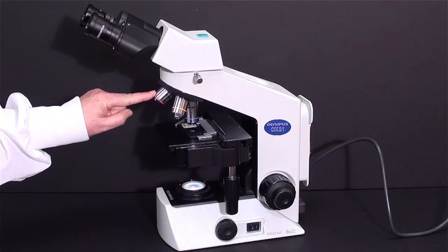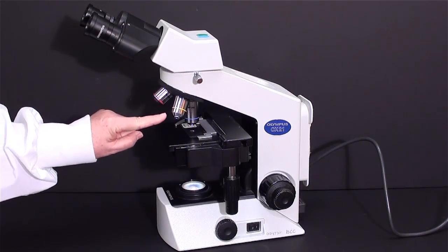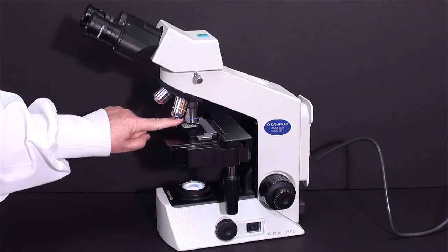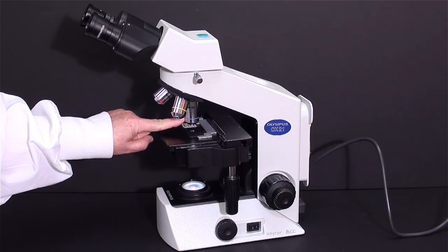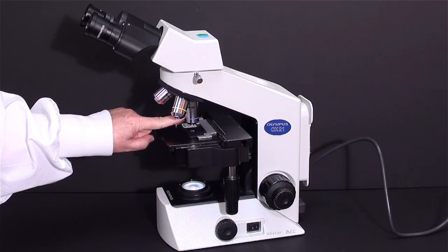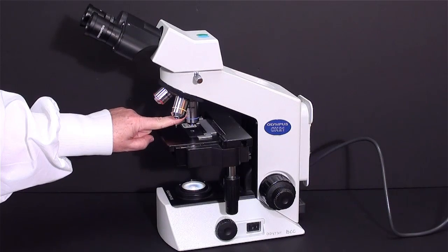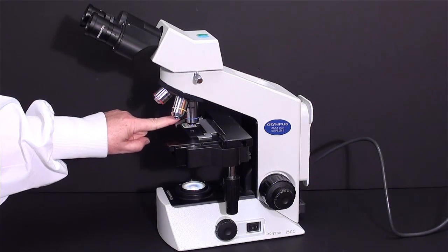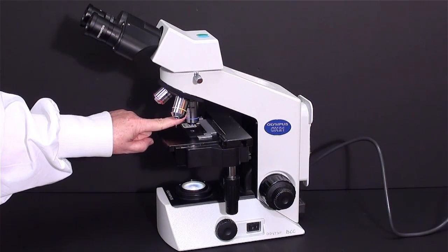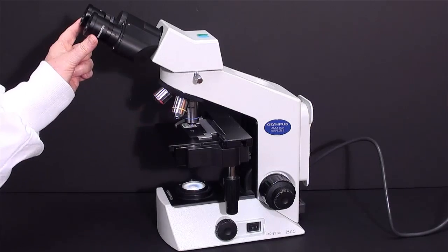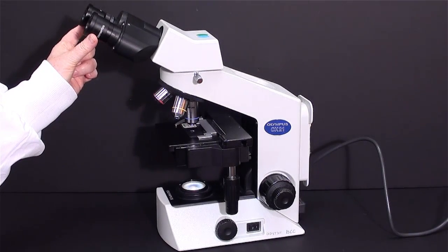These three objective lenses are called the scanning lens, the low power lens, and the high powered lens. When the high powered lens is in position, you have a total magnification of 400. 40x being provided by this lens and 10 by the eyepiece or ocular lenses.